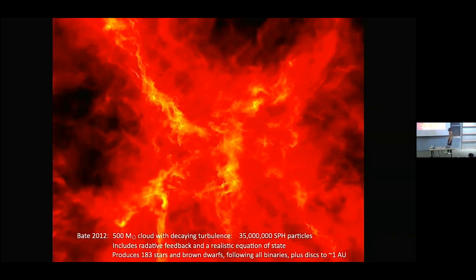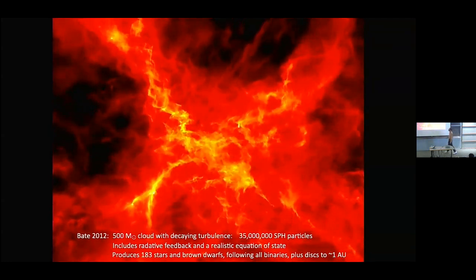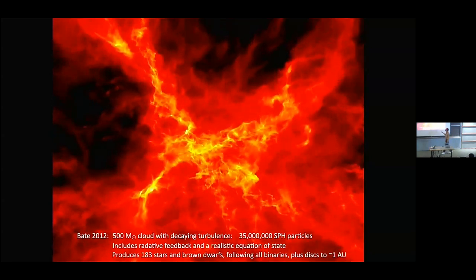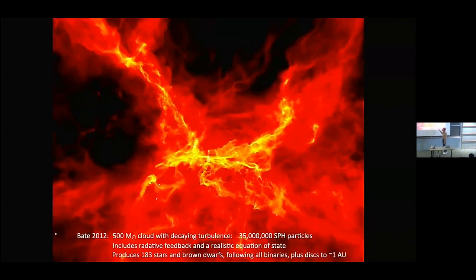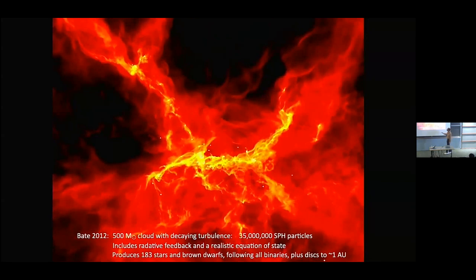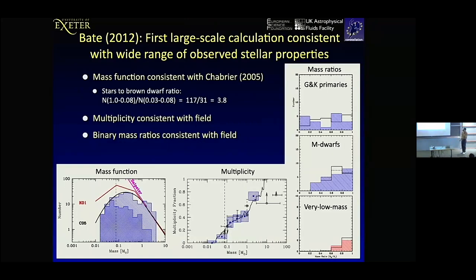This takes us to more complicated things in reality. I'm also well known for doing large simulations of star cluster formation. A calculation published in 2012 used 500 solar masses of gas with structure generated by decaying turbulence. The gas collapses and every white dot that forms is a star or brown dwarf. Some get ejected, some form little groups and clusters. This was the first large-scale simulation to produce a realistic population of stars — the initial mass function was similar to what we observe, multiplicity as a function of primary mass was well-reproduced, and even mass ratios of binaries as a function of mass were not too bad.